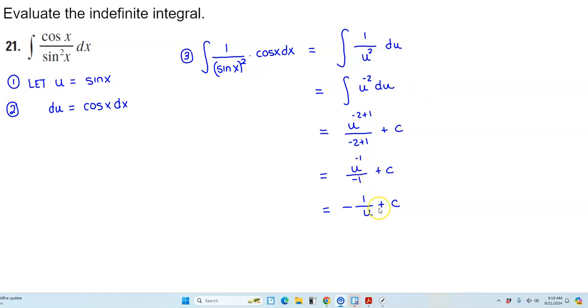And so what do we substitute u to be? At the beginning we said sine of x. So therefore we have negative 1 over the sine of x plus c. And therefore there is our result.